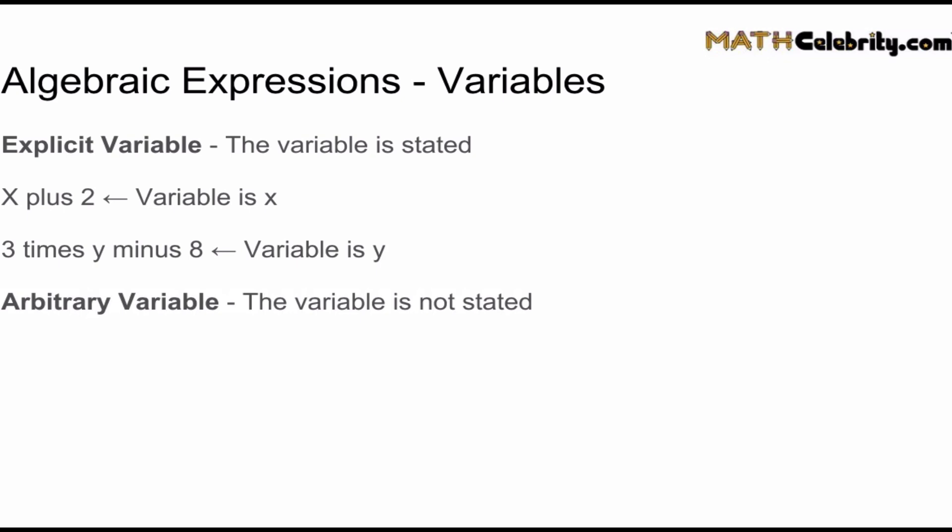But in those last two examples on the previous slide, the variable is not stated. And that's called an arbitrary variable. When you have an arbitrary variable algebraic expression, such as a number plus 2, the variable can be anything. Now, I usually use x because x is very popular inside schools and with math students.